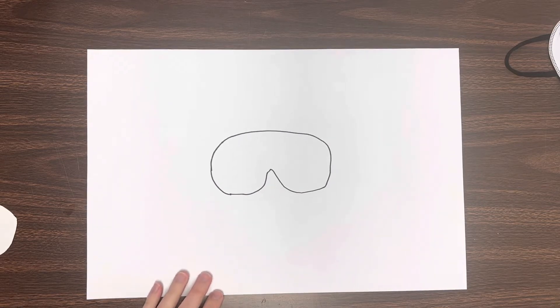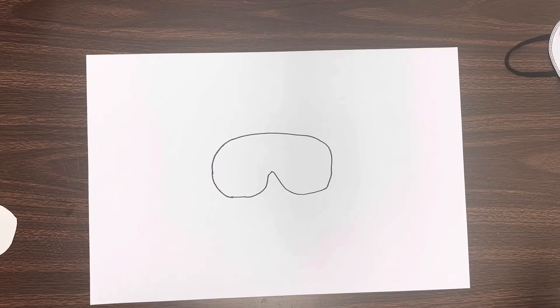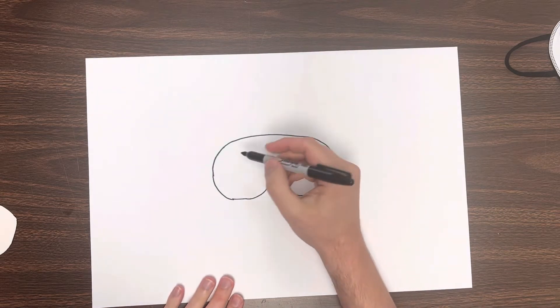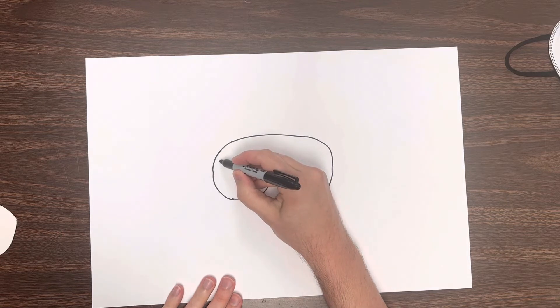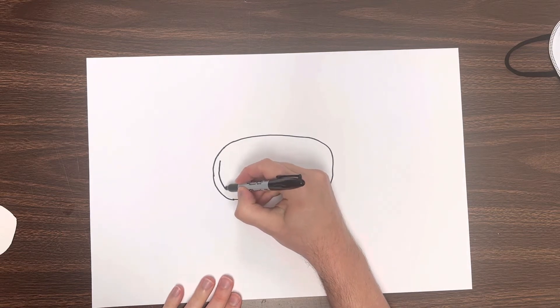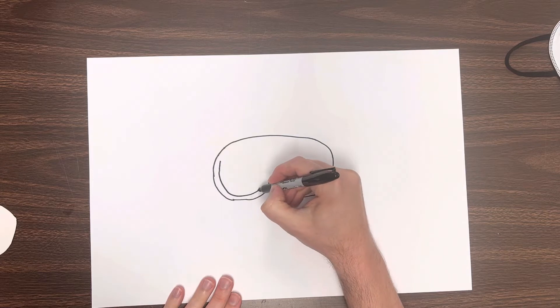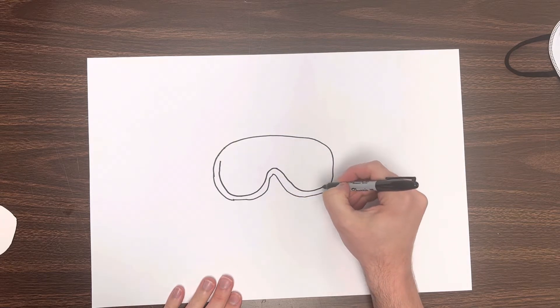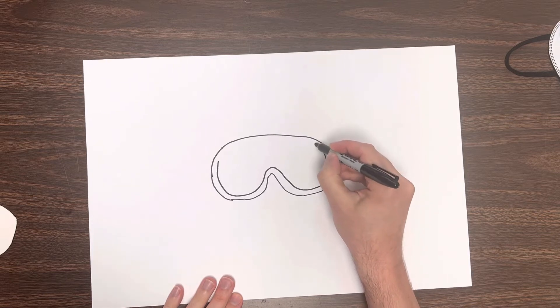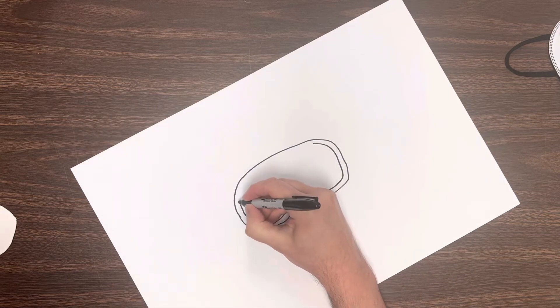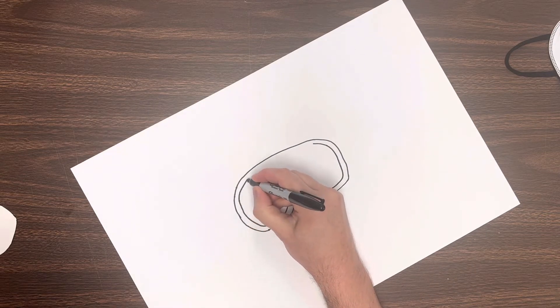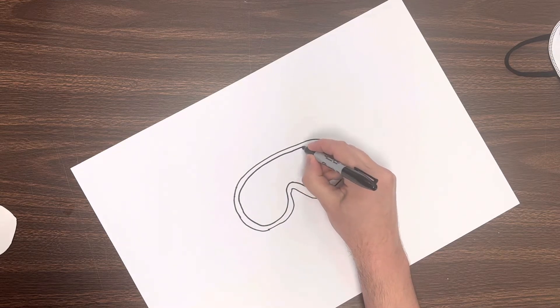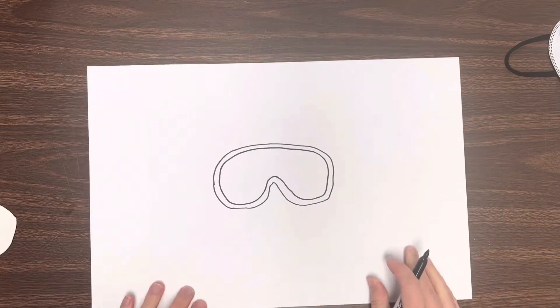Now next step, we are going to trace it, and you can trace it on the inside or the outside, doesn't really matter. We're going to keep those lines very close together though. So you're just going to follow that line that we just drew to make our underwater goggles. And it doesn't have to be perfect. I always like to think that those little imperfections are what makes it unique and more interesting. So if we take our time, we should be good.